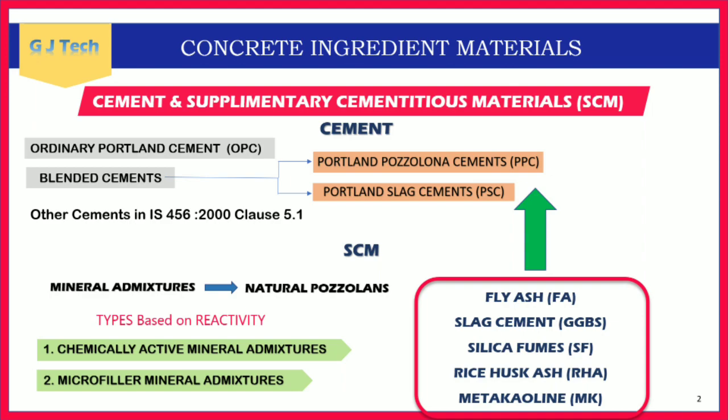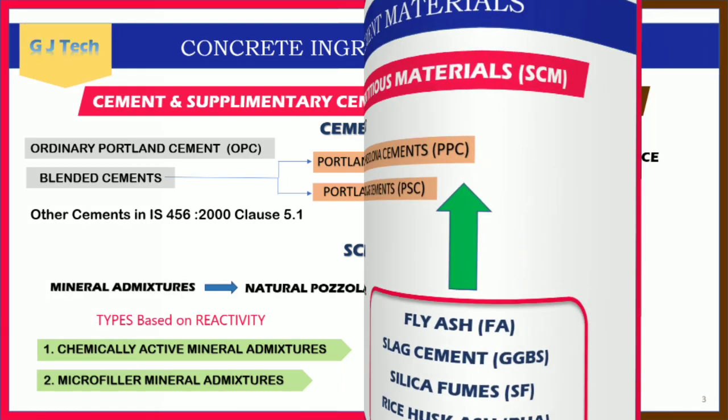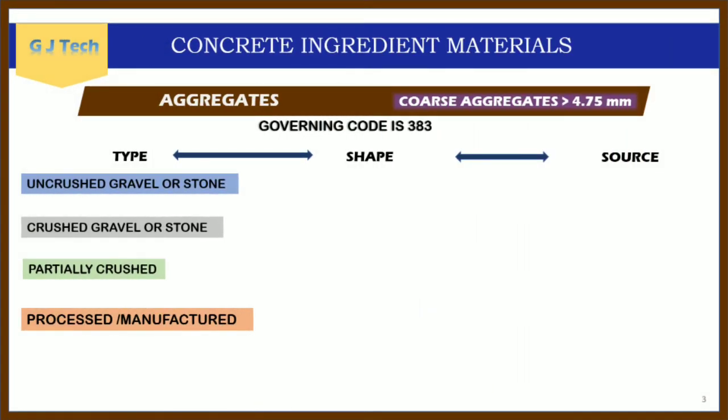Regarding aggregates, there are two kinds: coarse aggregates, which have a particle size higher than 4.75 mm, and fine aggregates, which have a particle size lower than 4.75 mm. There are four kinds of coarse aggregates that can be used in the mix proportioning of concrete.